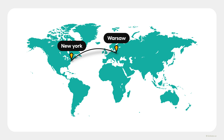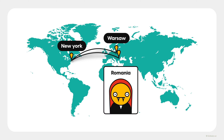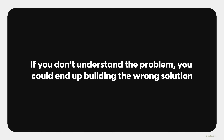Imagine if you were flying from New York to Warsaw, Poland. If the plane was aimed even one degree off course, you could end up in Romania getting eaten by vampires. In UX, the same thing happens if you don't frame the problem correctly. If you don't really understand the problem, you could end up building the wrong solution.